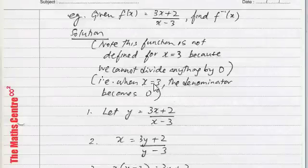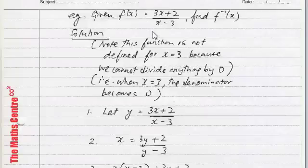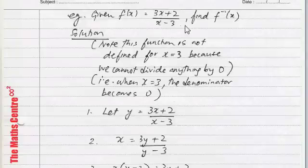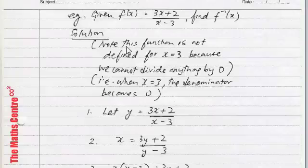Let's look at a more elaborate example. For example, you're given f of x equals to 3x plus 2 over x minus 3. And you're asked to find f inverse x. So, this is a rational function, 3x plus 2 over x minus 3. A couple of remarks.